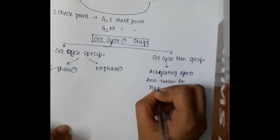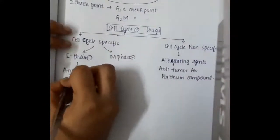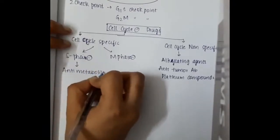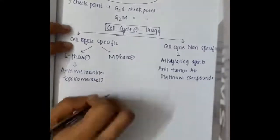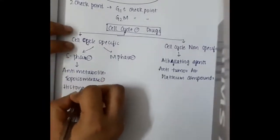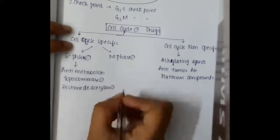S phase inhibitors include anti-metabolites, topoisomerase inhibitors, and histone deacetylase inhibitors.